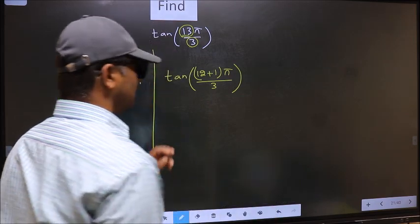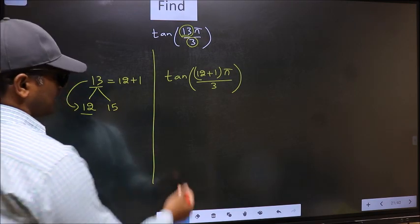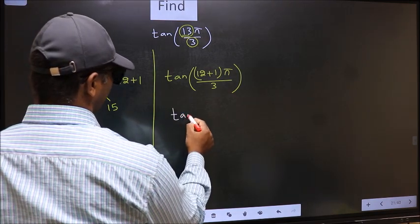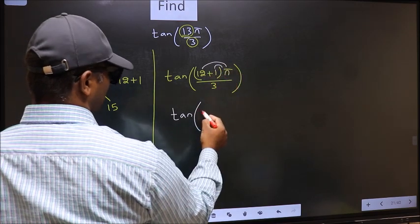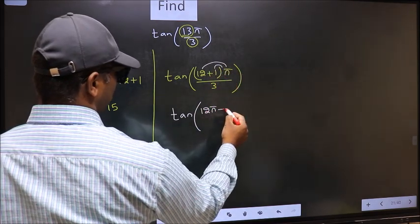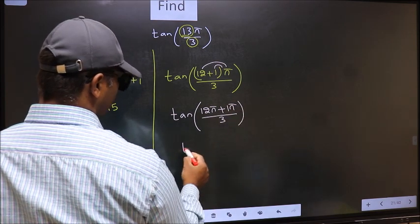This is your step 1. Next, tan. Now you should open the brackets. You get (12π + 1π)/3.